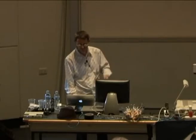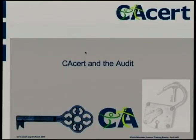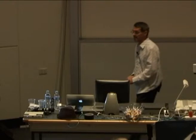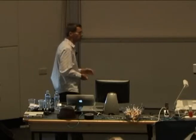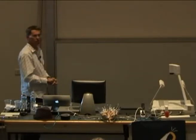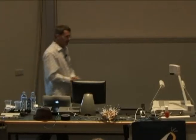As you can see, these slides are multipurpose and brought together in different fashions. CA-CERT and the audit: we need to get into the browsers so that we can get rid of these messages which you've all seen. For that, an audit is required. An audit is basically a review by an external party — the independent auditor — over the businesses and the systems. So it's both a governance side, business side, and a technical side. It's done against a set of documentation which for some reason we call policy. The essence, the easy way to remember this, is that we say what we do and we do what we say.